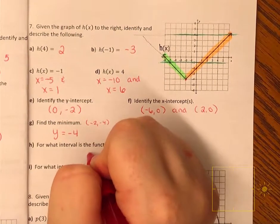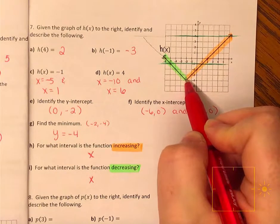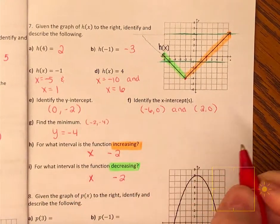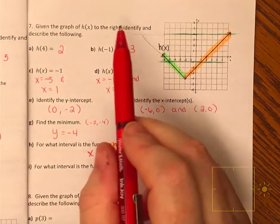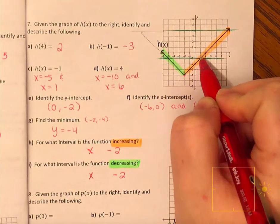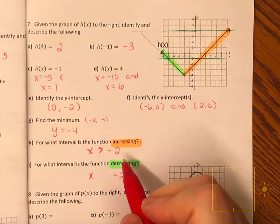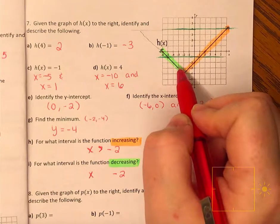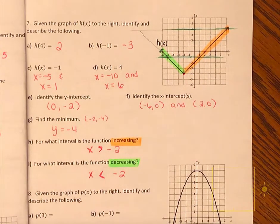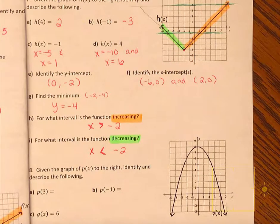It starts and stops at the same spot — the x value of negative 2. It's increasing on all numbers greater than negative 2, so x is greater than negative 2. It's decreasing on everything smaller than negative 2, so x is less than negative 2. I didn't include the equal sign because it's not increasing or decreasing at that value — that's where the minimum is.